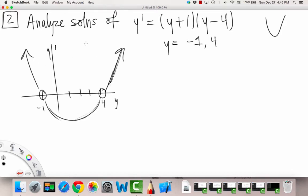So now we're going to draw our arrows on the phase line. So here y prime, which is here, y prime is positive, which means that y is increasing. So we're going to draw an arrow pointing right.